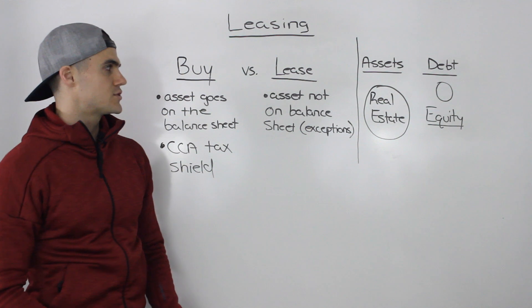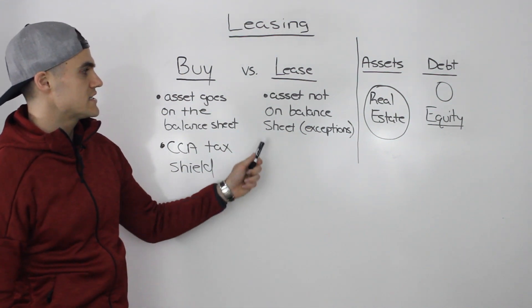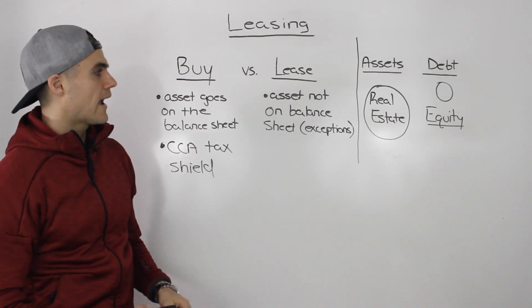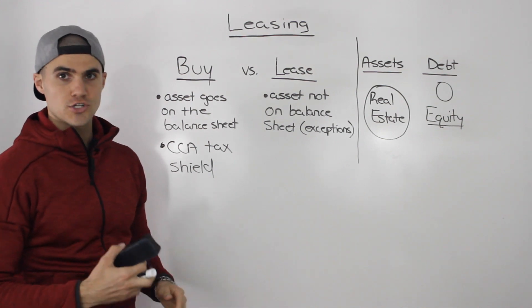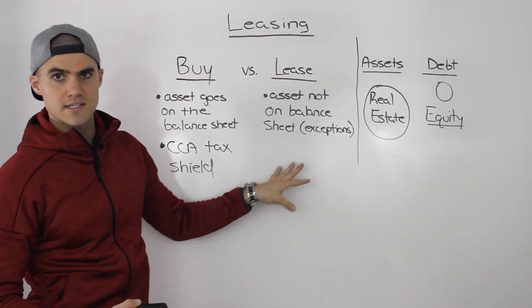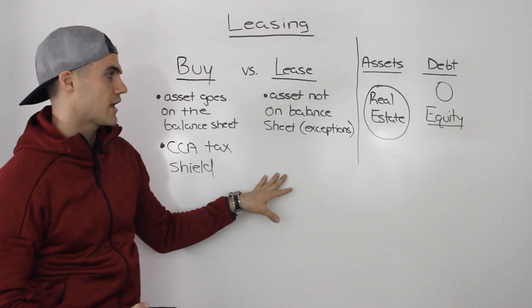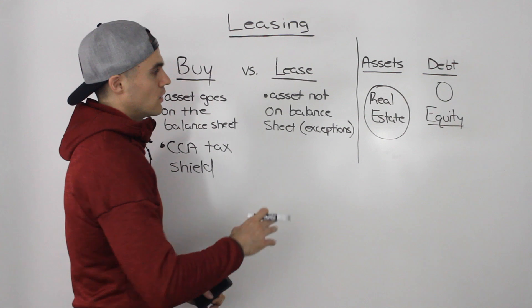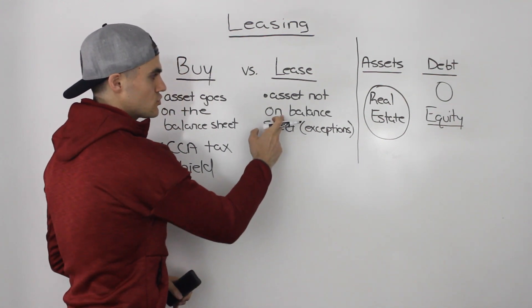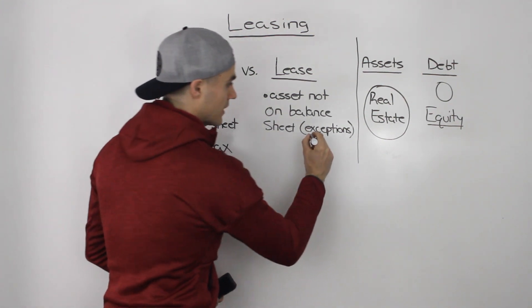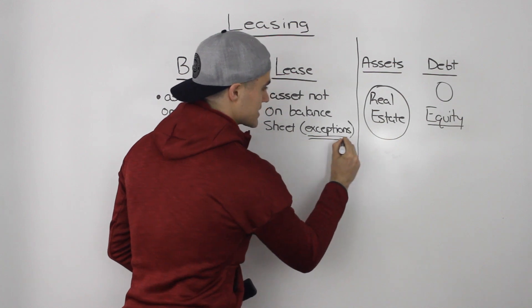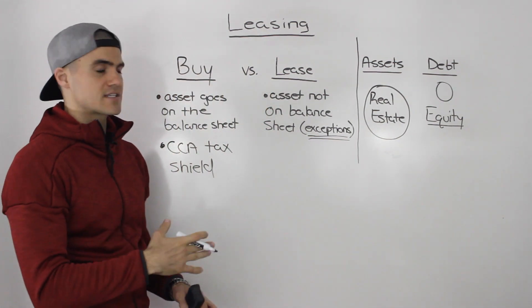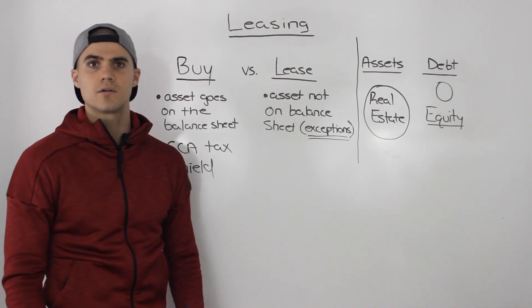In the next video we're going to get into a lot more detail about leases, and we're going to talk about the two major types of leases — an operating lease and a capital lease — and their different implications. Also, I mentioned that when you lease an asset it usually doesn't go on the balance sheet, but there are certain exceptions, and we are going to cover those exceptions in the next video as well.